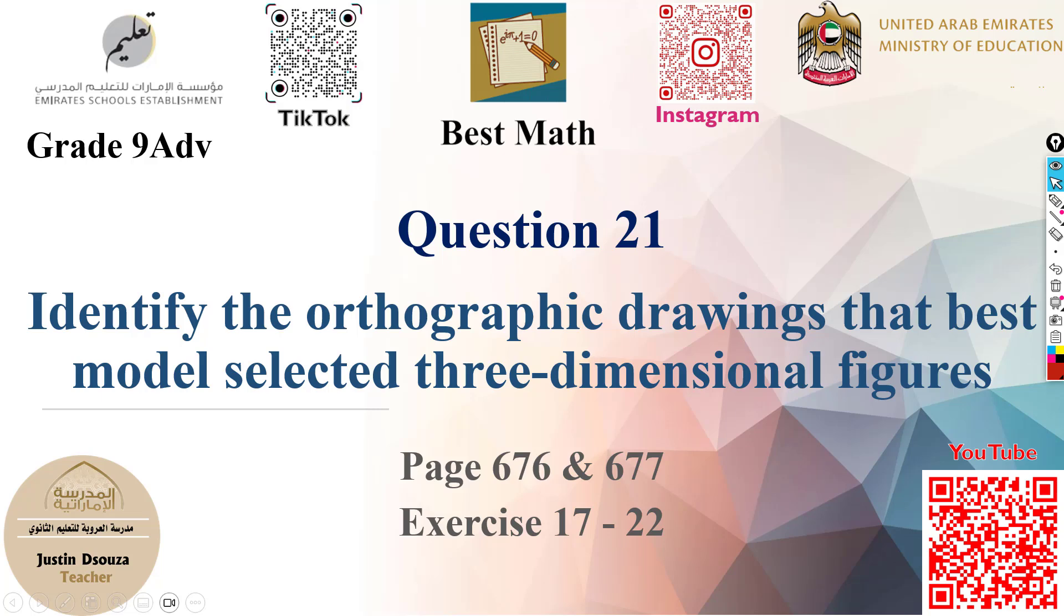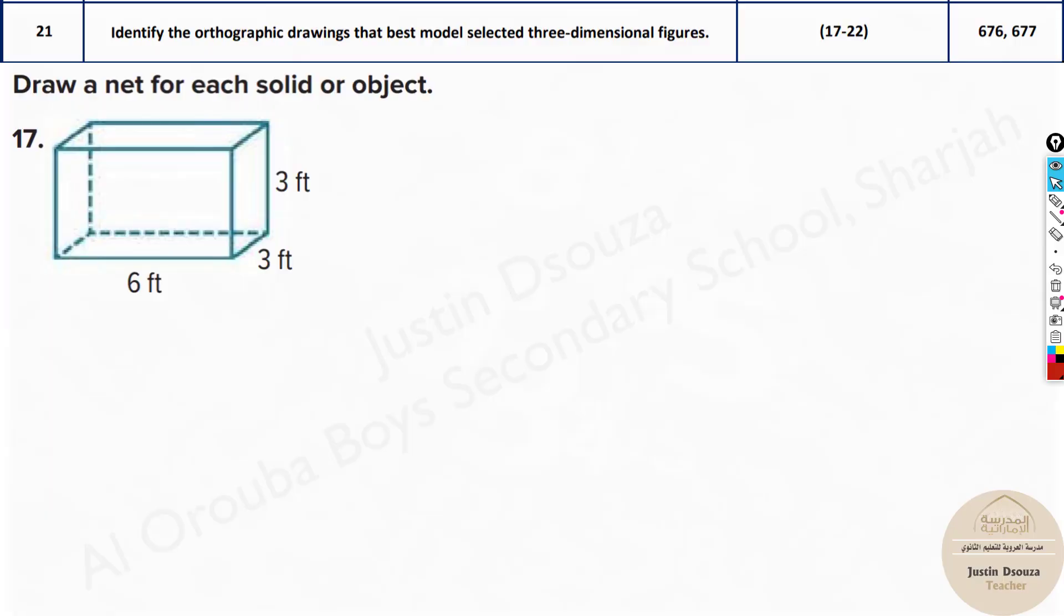Question 21 is to draw the net for the given three-dimensional figure. Here we can see we have a prism. And which type of prism is this? We can see it's a rectangular prism because the base and the width are not the same.